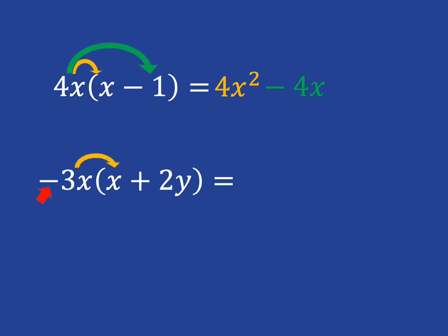So you're then going to have negative 3x times x, which is negative 3x squared, and then negative 3x times 2y, which is going to give you negative 3 times plus 2 is negative 6, so it'll give you negative 6xy.